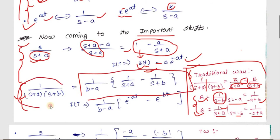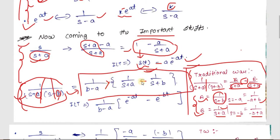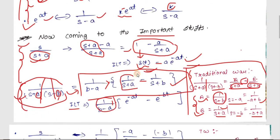A much faster formula: for 1/[(s+a)(s+b)], you can write it directly as 1/(b−a) · [1/(s+a) − 1/(s+b)]. Taking the inverse Laplace transform gives 1/(b−a) · [e^(-at) − e^(-bt)]. You can see how quickly you reach the answer compared to the traditional approach.